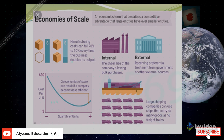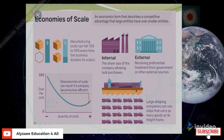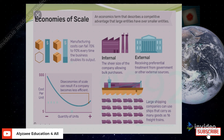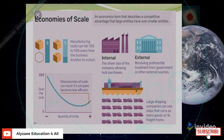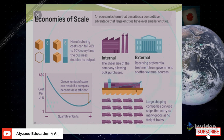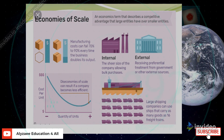If we plot cost per unit against quantity per unit graphically, economies of scale can result unless the company becomes less efficient. Looking at large shipping companies, a bigger investment with more capital involved means large shipping companies can use ships that carry as many goods as 16 freight trains. That is the significant impact under economies of scale.